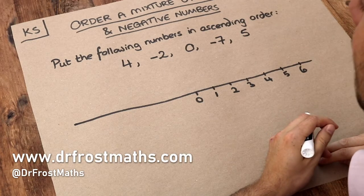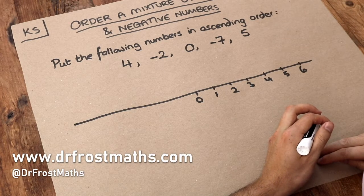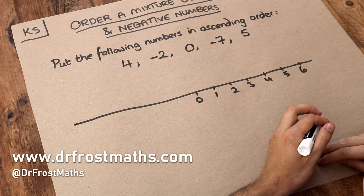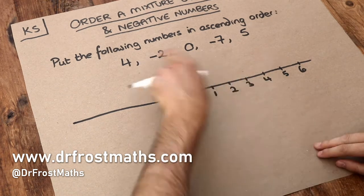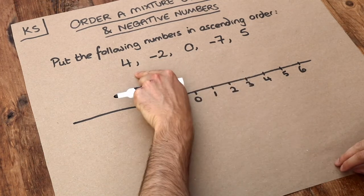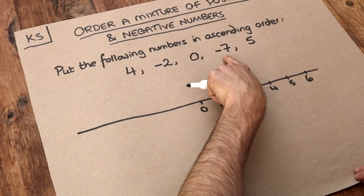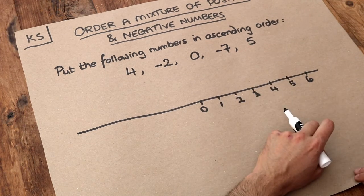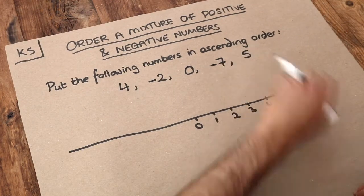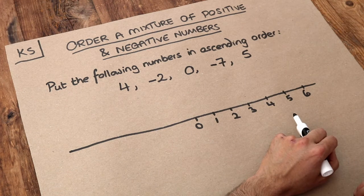Hello and welcome to this Dr. Frost Maths key skill video on ordering a mixture of positive and negative numbers. And we've got these five numbers here: four, we say this is negative two or minus two, zero, minus seven, five, and we need to put them in ascending order, that means in order from smallest to largest.